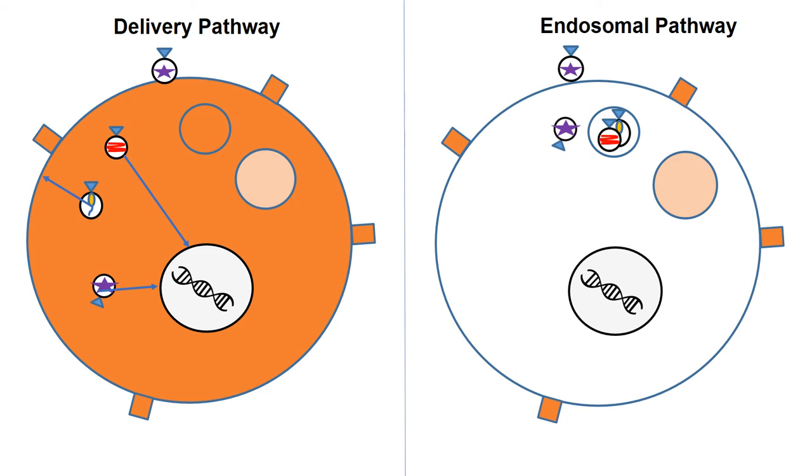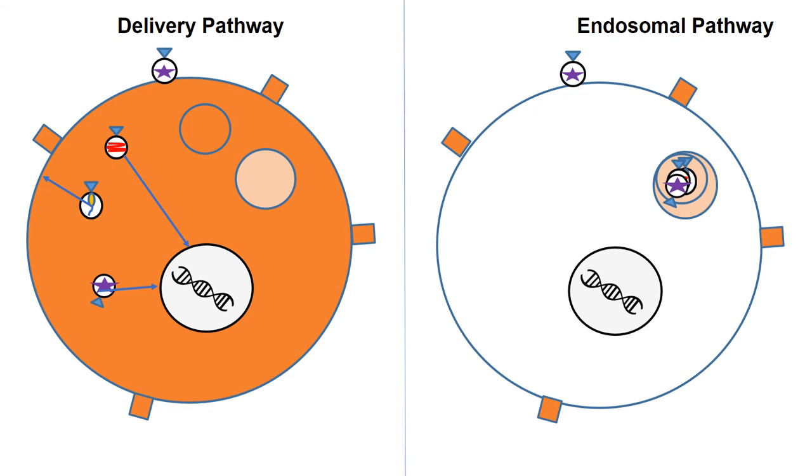First, the exosomes enter the early endosome. The early endosome then matures into the late endosome, and then enters the lysosome. Once it enters the lysosome, the acidic enzymes inside the lysosome break everything down.